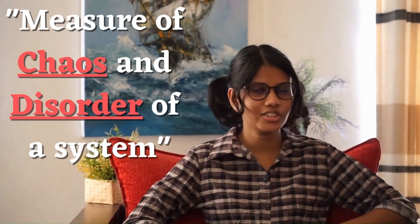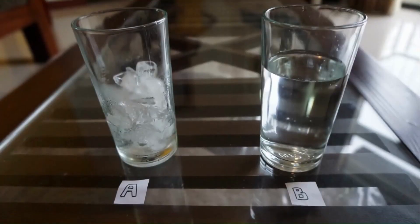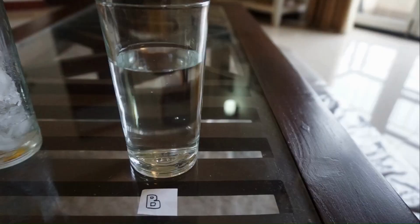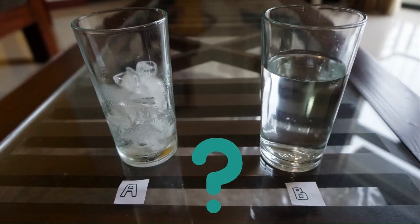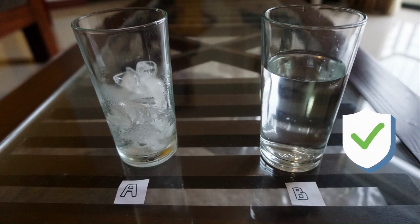To start off, entropy can be defined as a measure of chaos and disorder of a system, but this definition can be misleading. For example, compare these two systems here: A is a glass of crushed ice while B is a glass of water. If entropy relates to disorder, which glass has high entropy? Many people would say A, the glass of crushed ice, but actually B has high entropy.